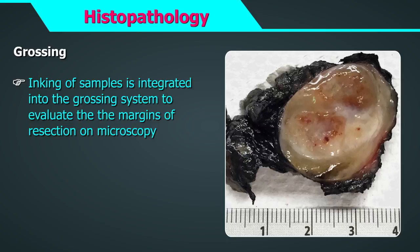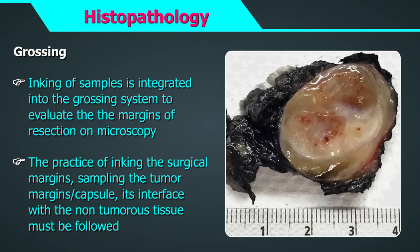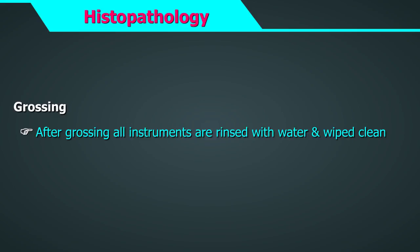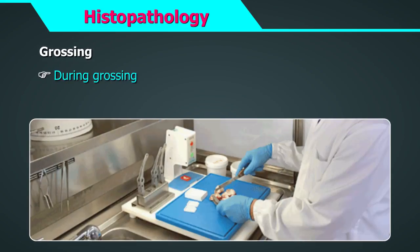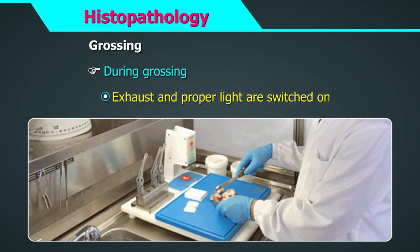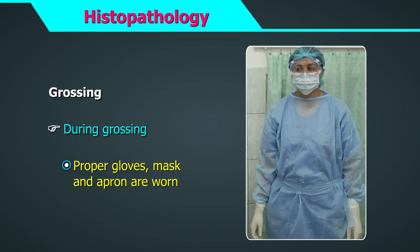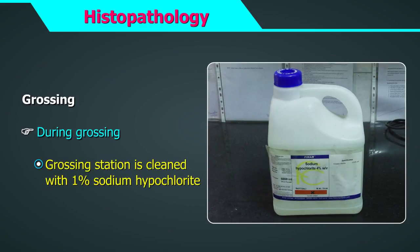Inking of samples must be integrated into the grossing system. This enables evaluation of the margins of resection on microscopy. The practice of inking surgical margins, sampling the tumor margins or capsule, and its interface with non-tumorous tissue must be followed. After grossing each specimen, the grossing area including all instruments shall be rinsed with copious amounts of water and wiped clean to prevent any mix-ups or floaters of tissues. It is ideal to perform grossing in well-ventilated, well-lit grossing stations. Exhaust and proper light should be switched on.